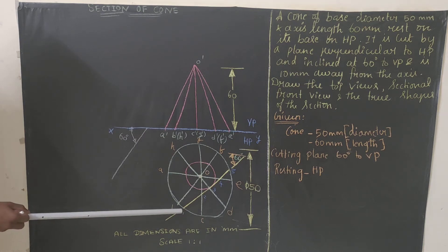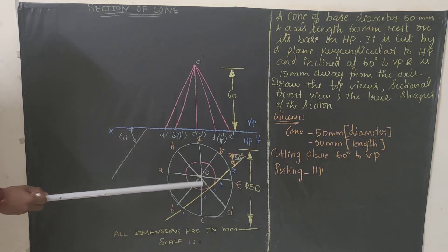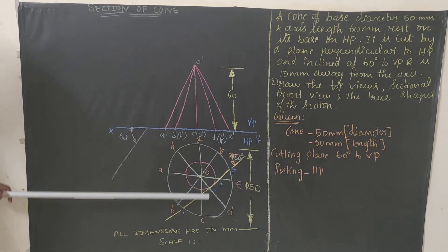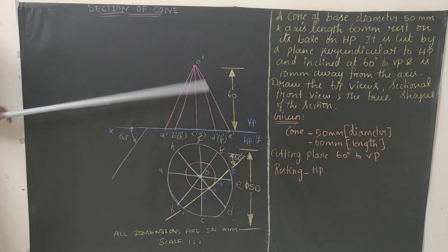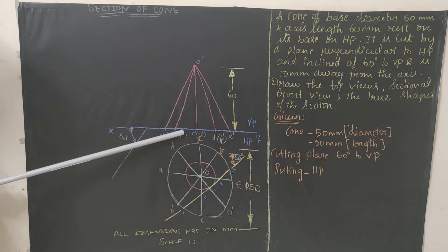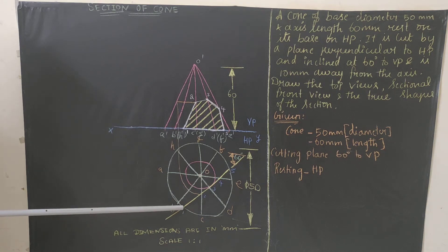Now identify the cutting points. Between B and C we get point 1; between O and C we get point 2; between O and D we get point 3; between O and E we get point 4; between F and E we get point 5. After marking these cutting points, rub the remaining unwanted part. Then project all cutting points vertically upward to get the sectional front view.